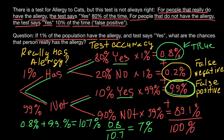One more time — if you test positive, it doesn't mean the 80% accuracy gives you an 80% chance that you are really positive for allergy. As we have found, the actual probability is approximately 7% — that is the real chance that you have a cat allergy if you test positive.